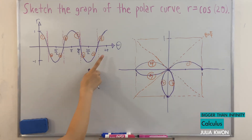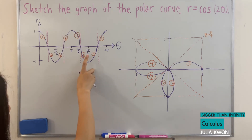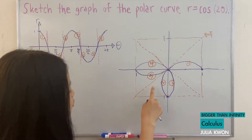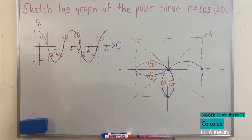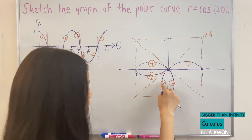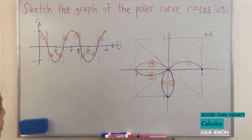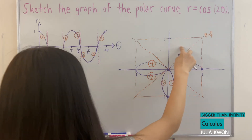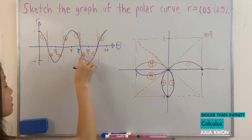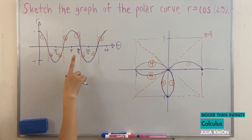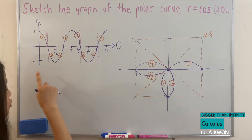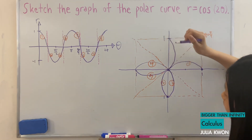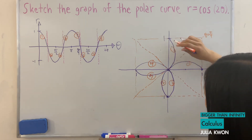For the sixth curve, theta is equal to five pi over four to three pi over two. We're working with negative radius values, so if we didn't have negative values we'd work on this side, but since we do, we work on the exact opposite side. As theta approaches three pi over two, the radius approaches negative one and gets smaller. So our sixth curve looks something like this.